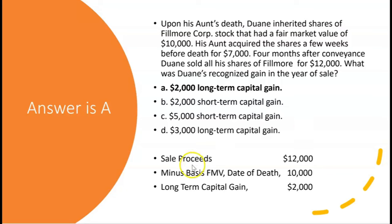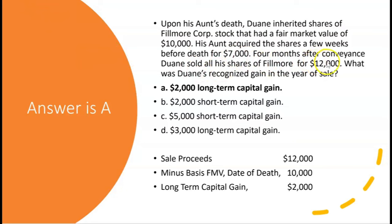The answer is A. Sale proceeds of $12,000 compared to Dwayne's basis — the fair market value at date of death — $10,000. Even though Dwayne only held the stock for four months after conveyance, he still gets a long-term capital gain of $2,000. The word 'conveyance' is very important — it means transfer. So four months after the stock was transferred to Dwayne, he sold all his shares.